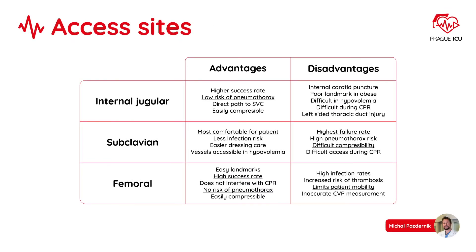Before we proceed with CVC insertion, we need to decide which side we are going to go with. There is an internal jugular vein, subclavian vein, and femoral vein. Probably the most frequently used site of placement is the right internal jugular vein.